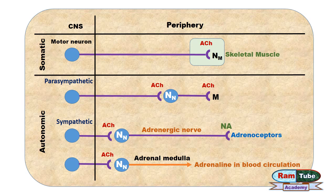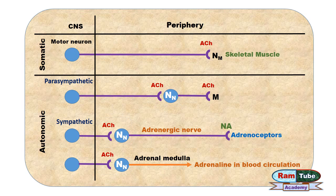In the case of the autonomic nervous system, whether it is the parasympathetic or sympathetic nervous system, the neurotransmitter released by the preganglionic nerve is always acetylcholine. However, it is different for the postganglionic fiber — in the parasympathetic nervous system, acetylcholine is released by the postganglionic fiber.